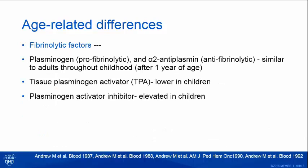Fibrinolytic factors are also different. Plasminogen and alpha-2-antiplasmin are similar to adults by about one year of age. The tissue plasminogen activator is lower in children, and plasminogen activator inhibitor is elevated in children.